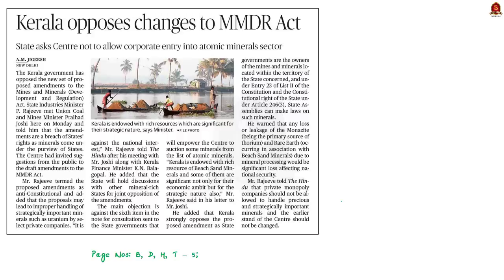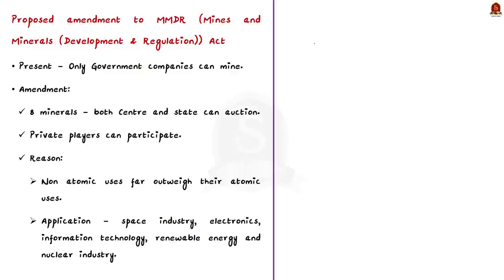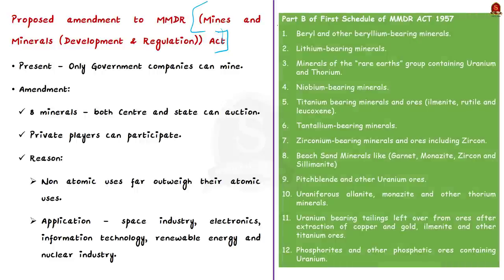Now let us take up this news article about the proposed amendment to the MMDR Act. MMDR stands for Mines and Minerals Development and Regulation Act. Certain amendments have been proposed to this act and it is now opposed by the Kerala government. The main issue highlighted is regarding a sixth item. Right now, 12 minerals are placed in Part B of the First Schedule of the MMDR Act — and you can see that many of them are strategically important for India, including rare earth group of minerals. According to the present regulation, only government companies can obtain a license for mining these minerals. But what the amendment proposes is that out of these 12 listed minerals, many have non-atomic applications, and in most cases their non-atomic uses far outweigh their atomic uses.